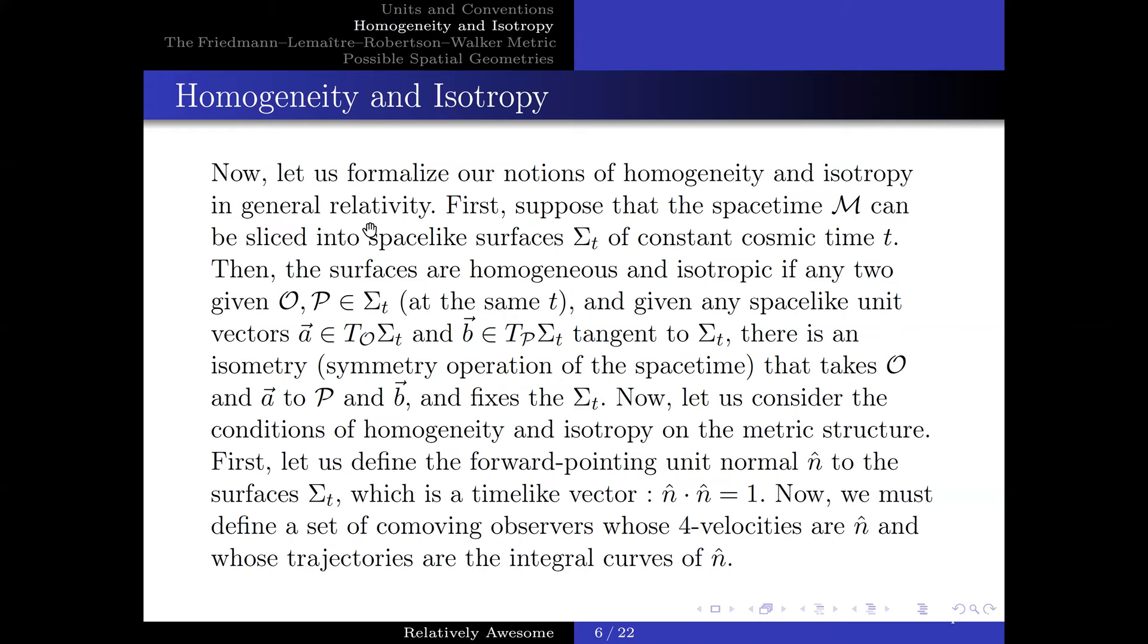Now, let us formalize the notion of homogeneity and isotropy in general relativity. First, suppose that the spacetime M can be sliced into spacelike surfaces Σ_t of constant cosmic time t. Then, the surfaces are homogeneous and isotropic if any two given O and P in Σ_t at the same t,